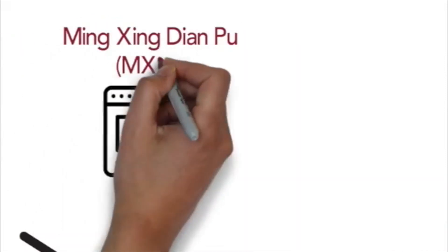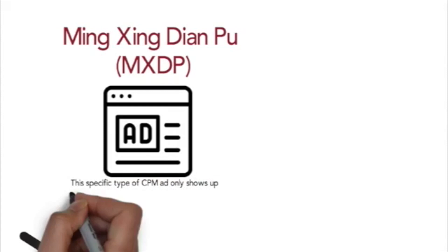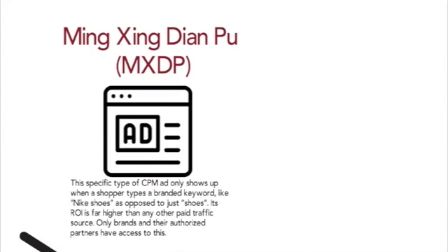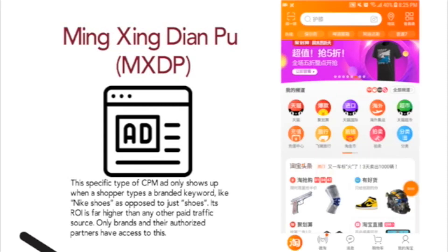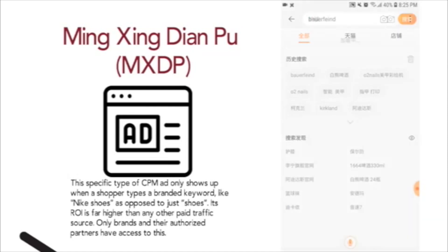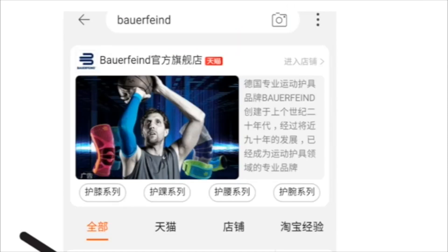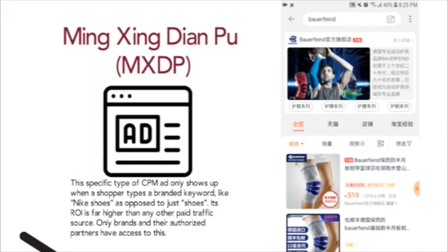Mingxingdianpu, or MXDP, is a special type of cost per mil CPM advertising on Taobao, and it's available to brands only. It generates ROIs far greater than any other type of paid traffic. People see this in the search results page when they include a brand name in their search term. It's the first thing they see before any other search result.